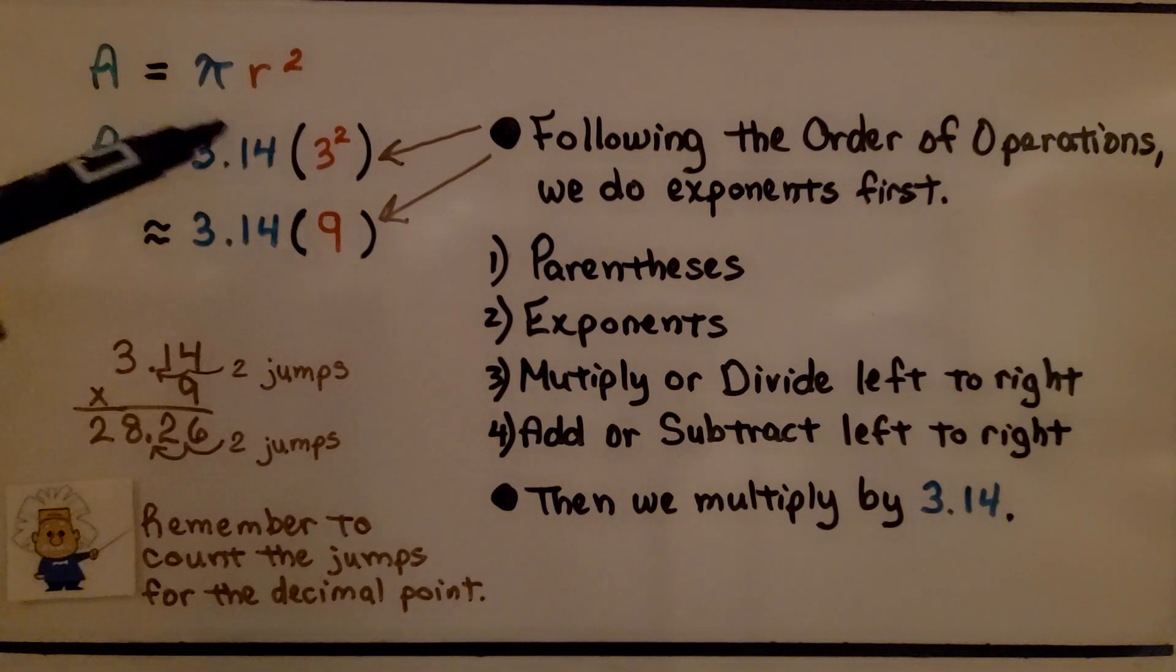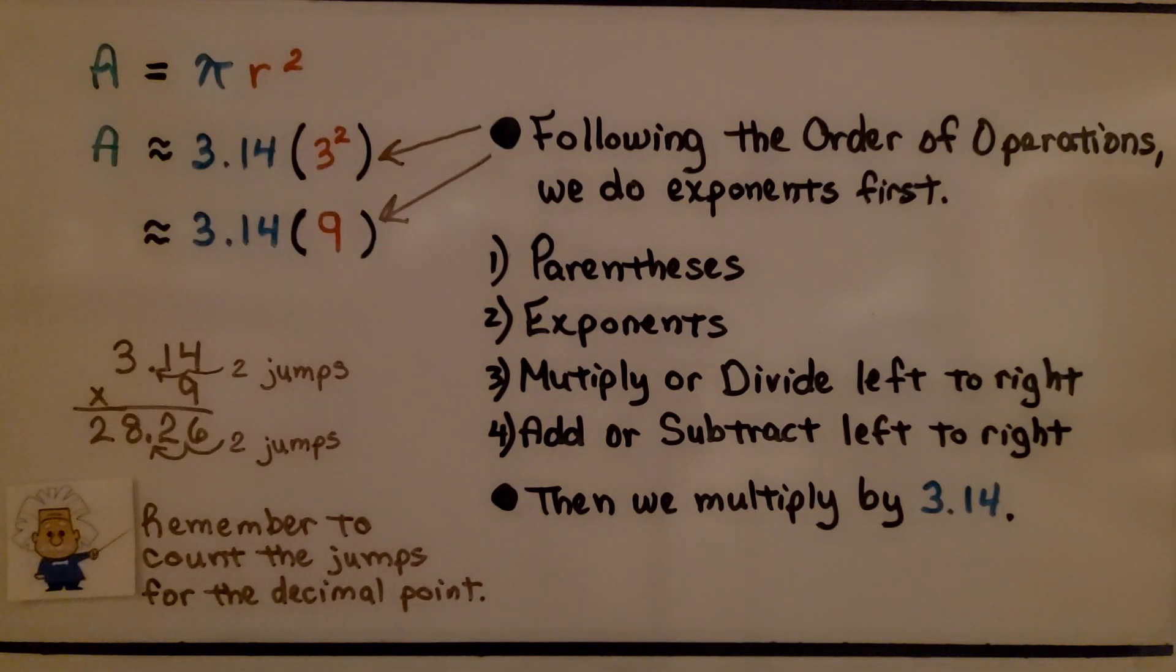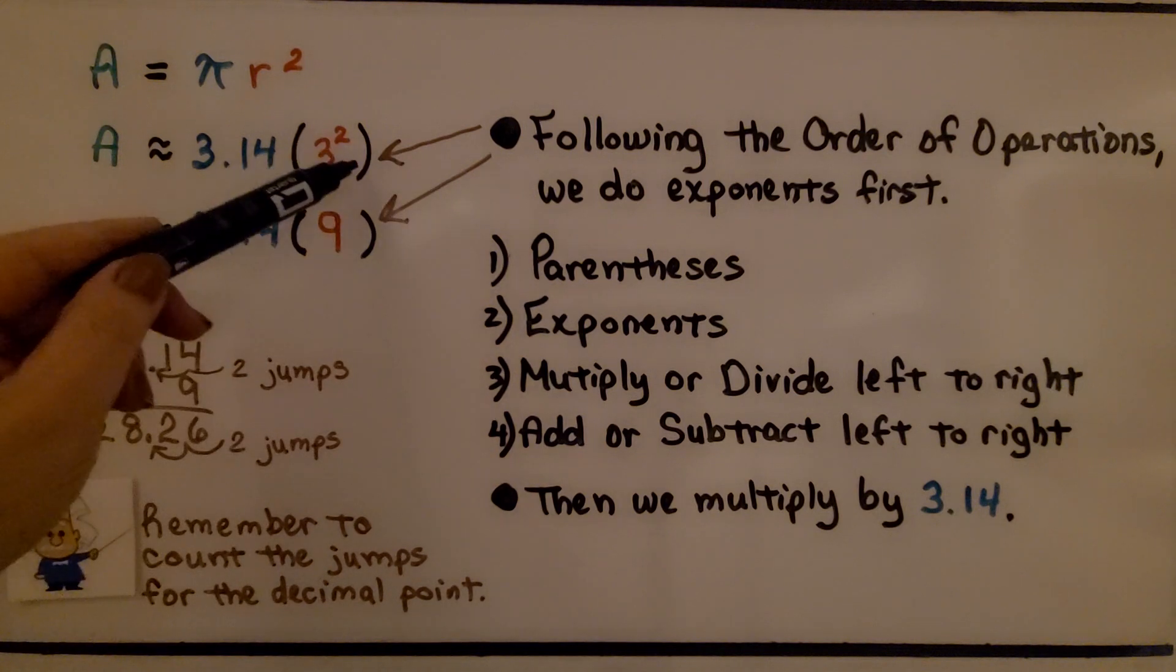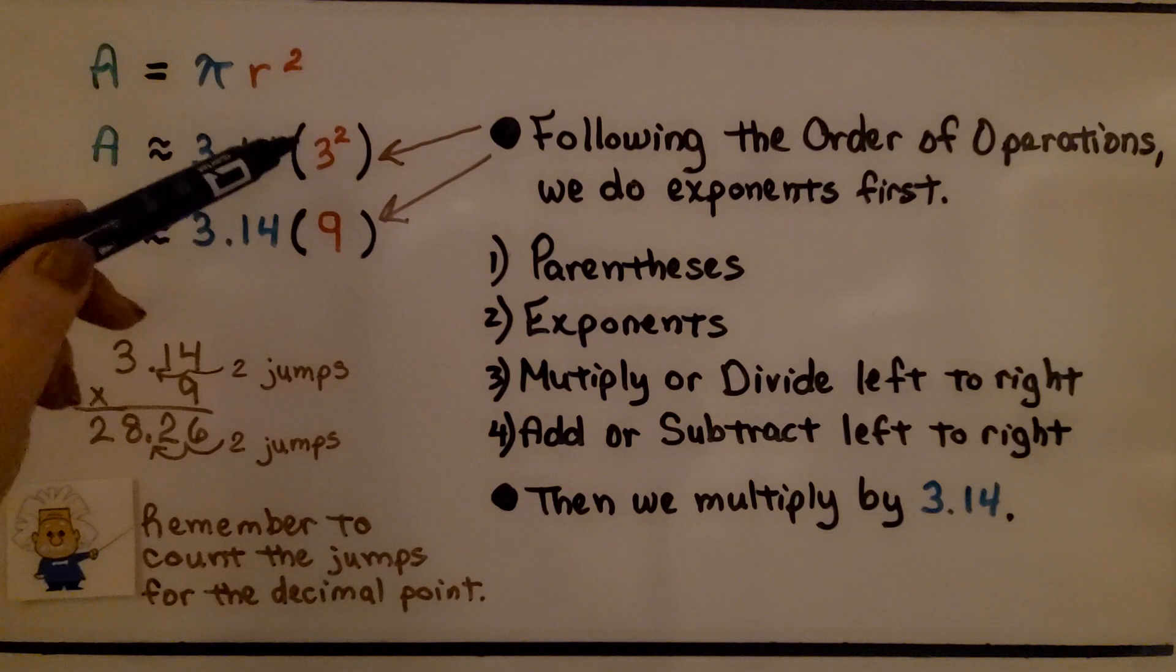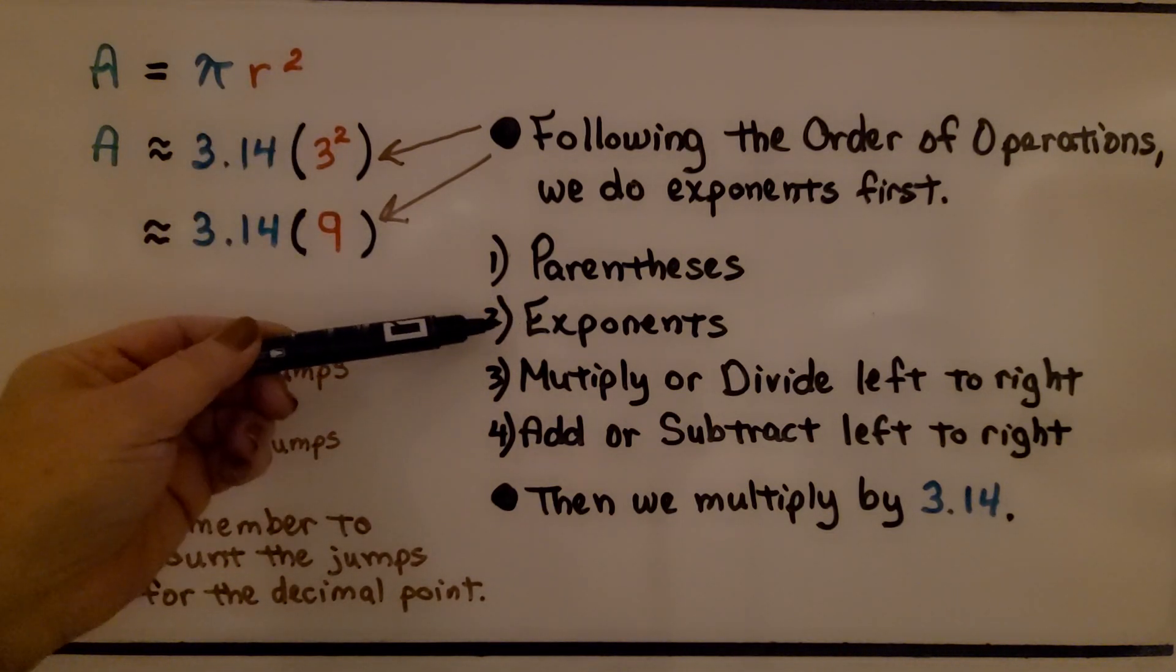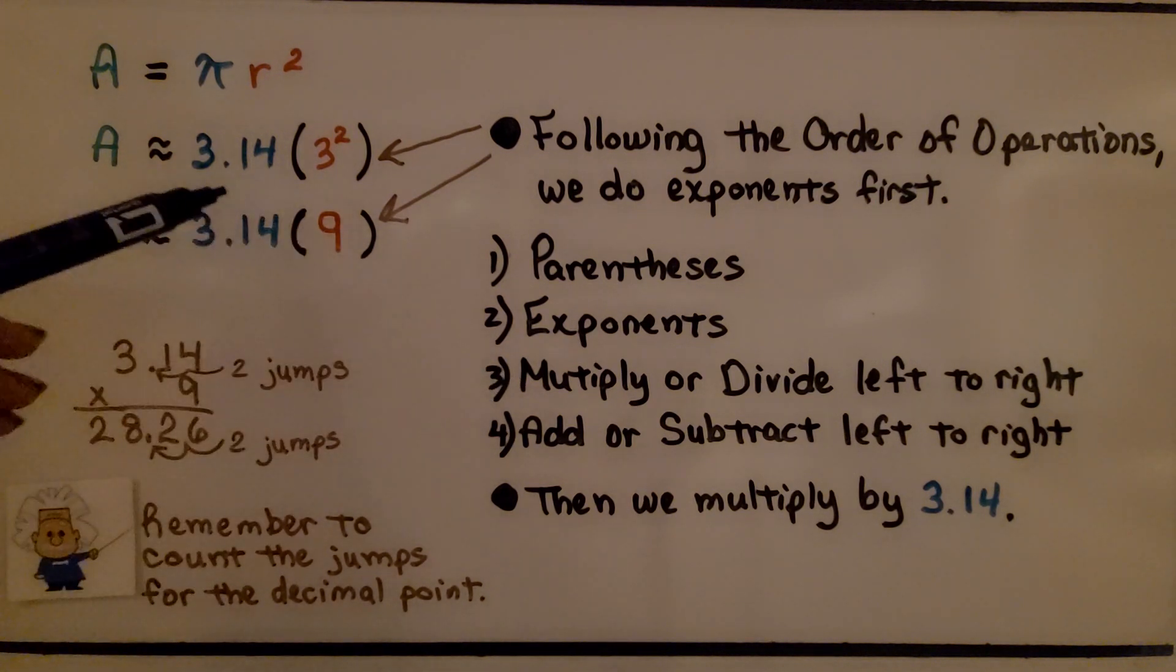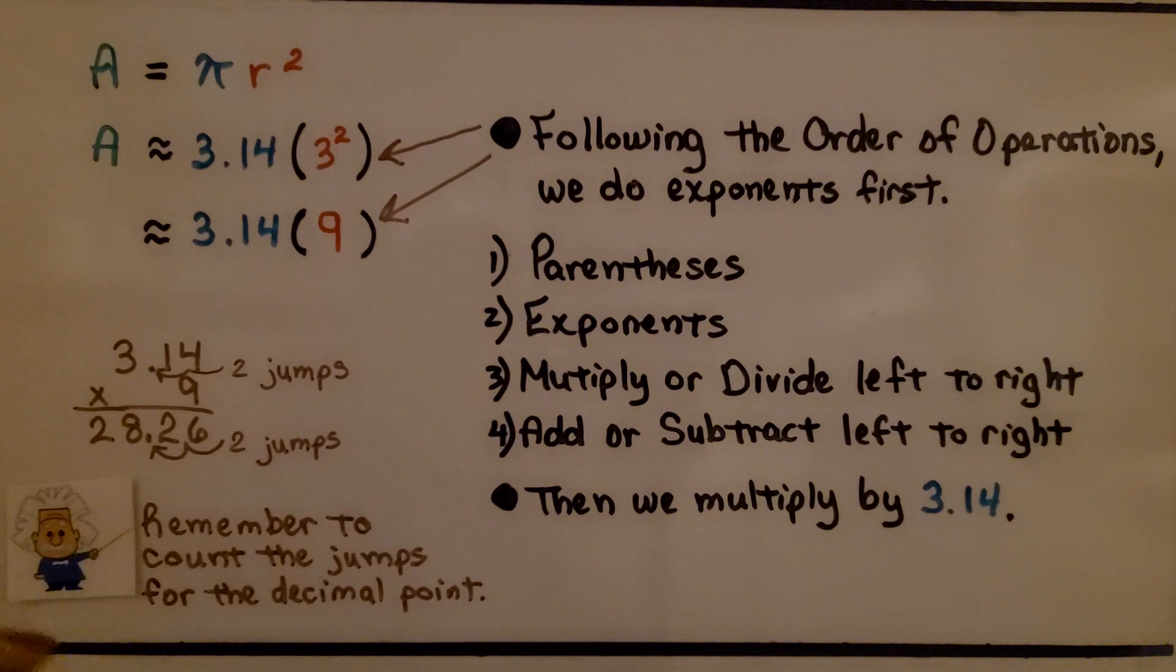So do you notice we did 3 squared first to get 9? We follow the order of operations. We do exponents first. And we have these in parentheses to separate the 3 squared from the 3.14, but technically this is an exponent. So we do the exponent, then we multiply or divide from left to right. And we have multiplication. There's no addition and subtraction, so we skip that step.